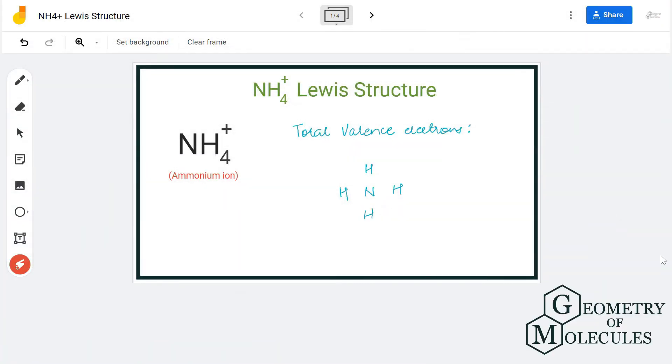Hi guys, today in this video we are going to look at the Lewis structure for ammonium ion. It is written as NH4+. The plus charge here means it has a positive charge as it is giving away one electron.